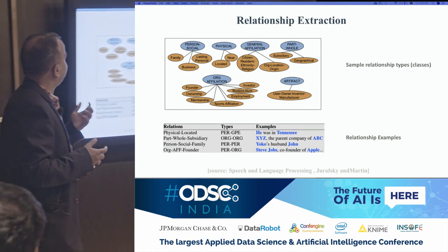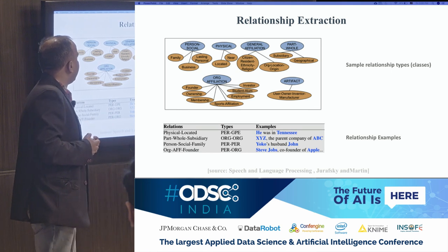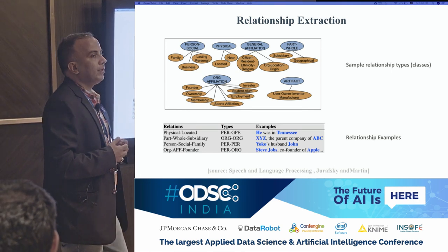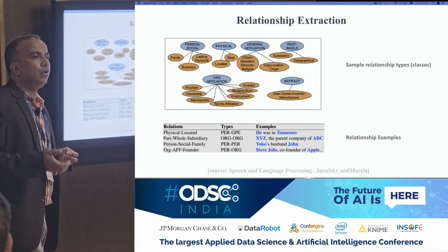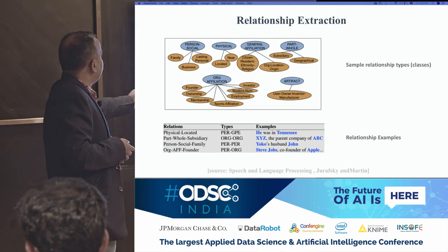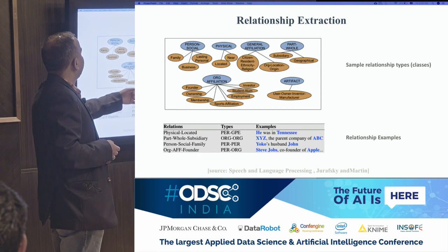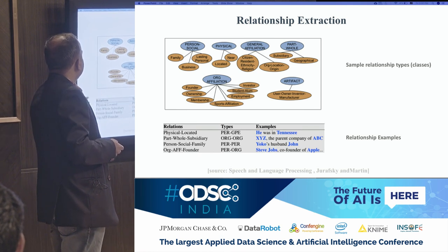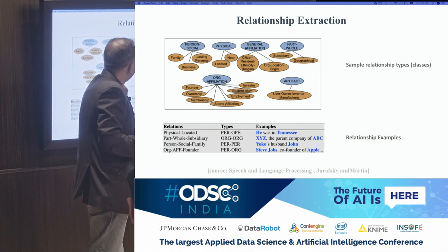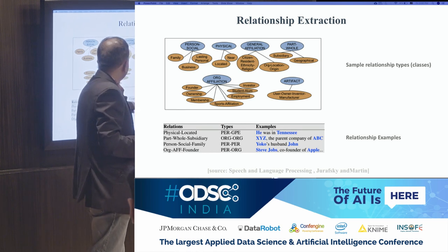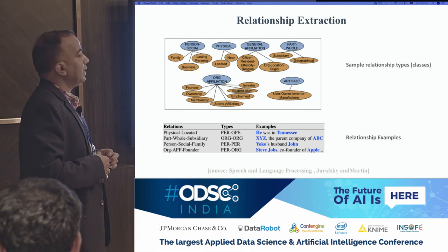The relationships important for finance will not be important for medicine. Similarly, things relevant for medicine might not be relevant for security. That's one reason I thought we should talk about relationship extraction here — it's something very domain-specific and not easy to just take off the shelf. What I have at the top here is a taxonomy of relationships you might want to use. On the bottom are examples — physical location: 'he was in Tennessee'; part-whole: 'XYZ is the parent company of ABC.' The items in blue are examples of entities.